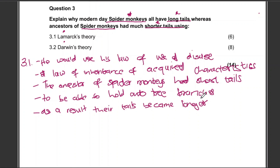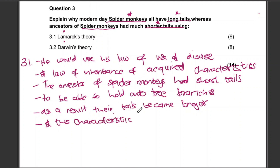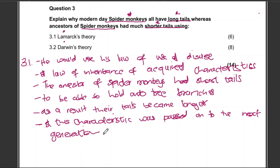His Law of Inheritance of Acquired Characteristics states that this characteristic — the longer tail — will be passed on to the next generation. This characteristic was passed on to the next generation. For the last point, please don't say 'in this gene' or 'in this allele' — don't say that.